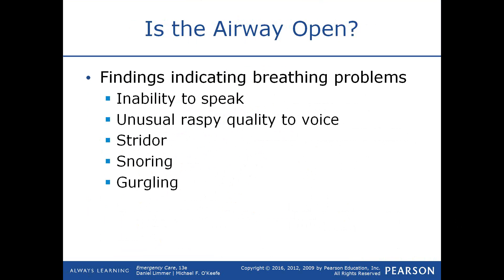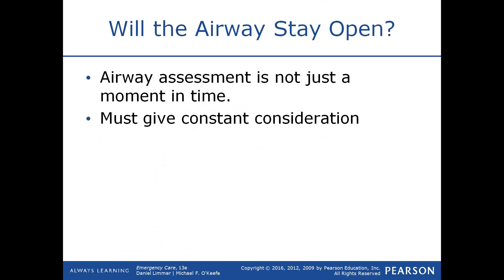Signs that a person is having breathing problems include inability to speak — if they can't speak at all, they may have a complete airway obstruction as learned in basic life support. An unusual raspy or hoarse voice may indicate an airway obstruction. Stridor is an inspiratory noise heard in patients with upper airway obstruction. Snoring indicates tongue obstruction, and gurgling in the back of the mouth indicates fluid accumulating in the airway while the patient breathes.